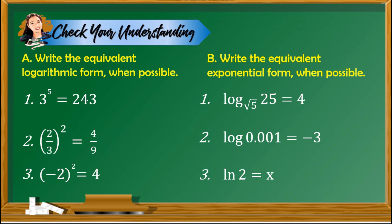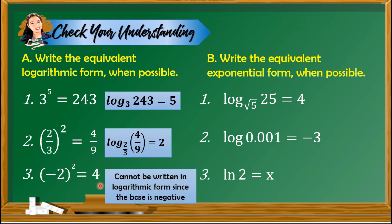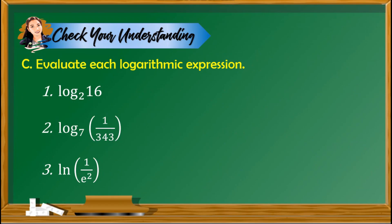Let's check your understanding. You may pause the video to answer the following items. For part A: item 1 — log base 3 of 243 equals 5; item 2 — log base 2/3 of 4/9 equals 2; item 3 — this cannot be written in logarithmic form since the base is negative. For part B: item 1 — the square root of 5 raised to 4 equals 25; item 2 — 10 raised to negative 3 equals 0.001; item 3 — e raised to x equals 2.